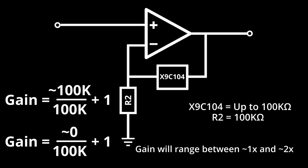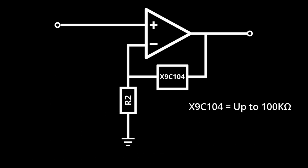This would work if we wanted our gain to vary between 1 and 2, but we probably want a bit more potential gain than just 2. Also, having the resistance of R1 be near 0 is probably a bad idea.